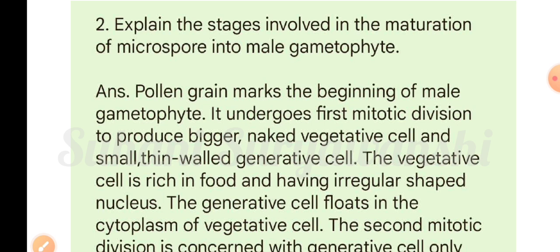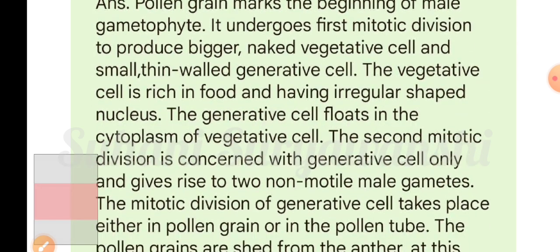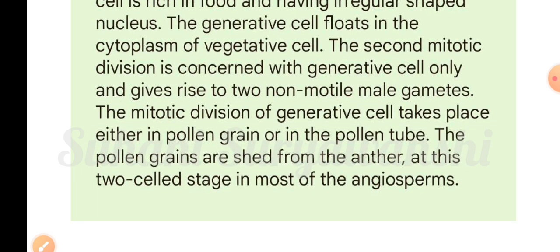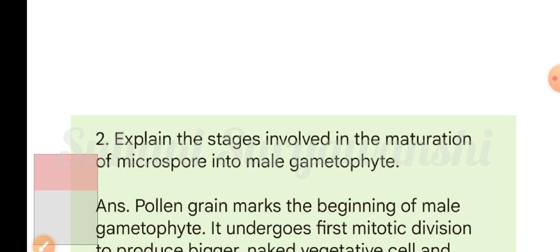Question two: explain the stages involved in the maturation of microspore into male gametophyte. The pollen grain marks the beginning of the male gametophyte. It undergoes a first mitotic division to produce a bigger, naked vegetative cell and a small, thin-walled generative cell. The vegetative cell is rich in food and has an irregularly shaped nucleus. The generative cell floats in the cytoplasm of the vegetative cell. A second mitotic division of the generative cell gives rise to two non-motile male gametes. This division takes place either in the pollen grain or in the pollen tube. Pollen grains are shed at the two-cell stage in most angiosperms.